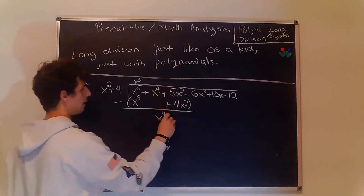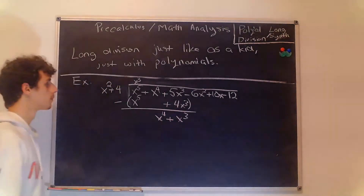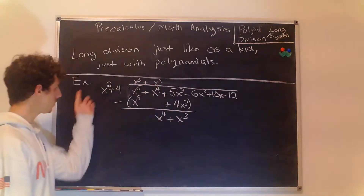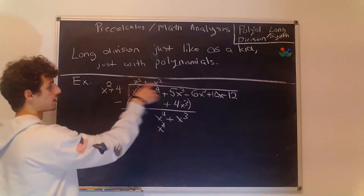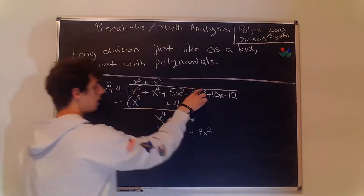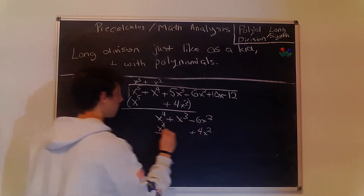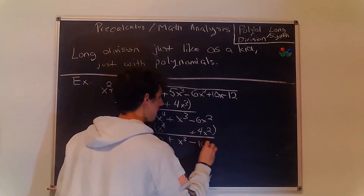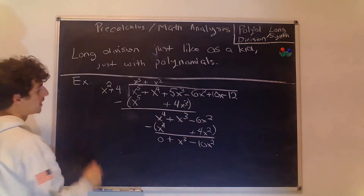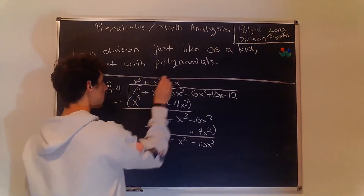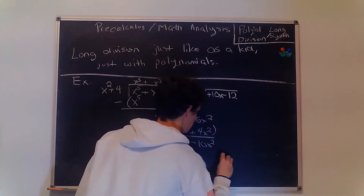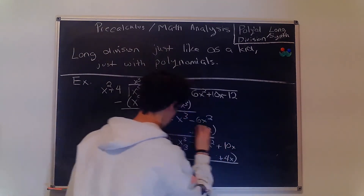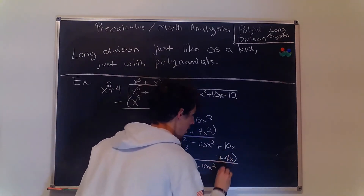We bring the x to the 4th down and get 1x cubed. Now what do we multiply x squared by to get x to the 4th? That's x squared. We play the same game: x to the 4th plus 4x squared. We bring down the minus 6x squared and group and subtract, giving us 0 plus x cubed minus 10x squared. Now x squared into x cubed goes in x times, giving us x cubed plus 4x. We bring our x term down, group, and subtract again, giving us 0 minus 10x squared plus 6x.